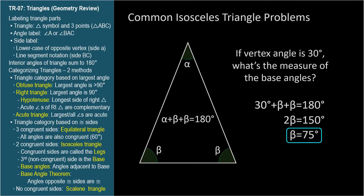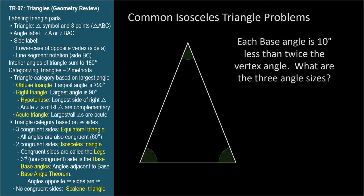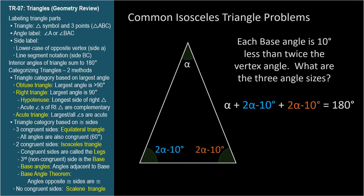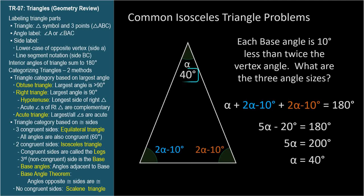What if we're told that each base angle is 10 less than twice the vertex angle? What are the three angles in this isosceles triangle? It sounds more complicated, but again, it's just algebra. Let alpha equal the vertex angle. The base angles are each 2 alpha minus 10 degrees. We end up with alpha plus 2(2 alpha minus 10 degrees) equals 180 degrees, so 5 alpha minus 20 degrees equals 180 degrees, giving 5 alpha equals 200 degrees. So alpha, the vertex angle, must be 40 degrees. The base angles are 10 degrees less than twice 40, so they're each 70 degrees. Check: 40 plus 70 plus 70 equals 180. These types of problems test the base angle theorem and that a triangle's interior angles sum to 180 degrees.